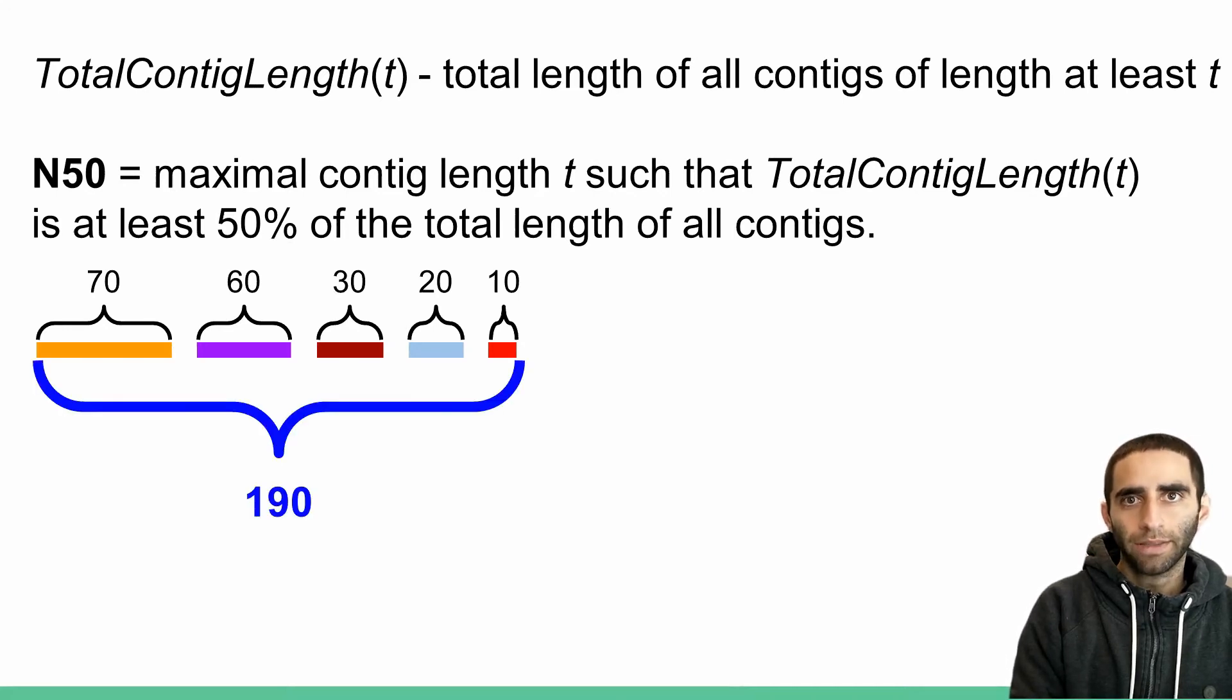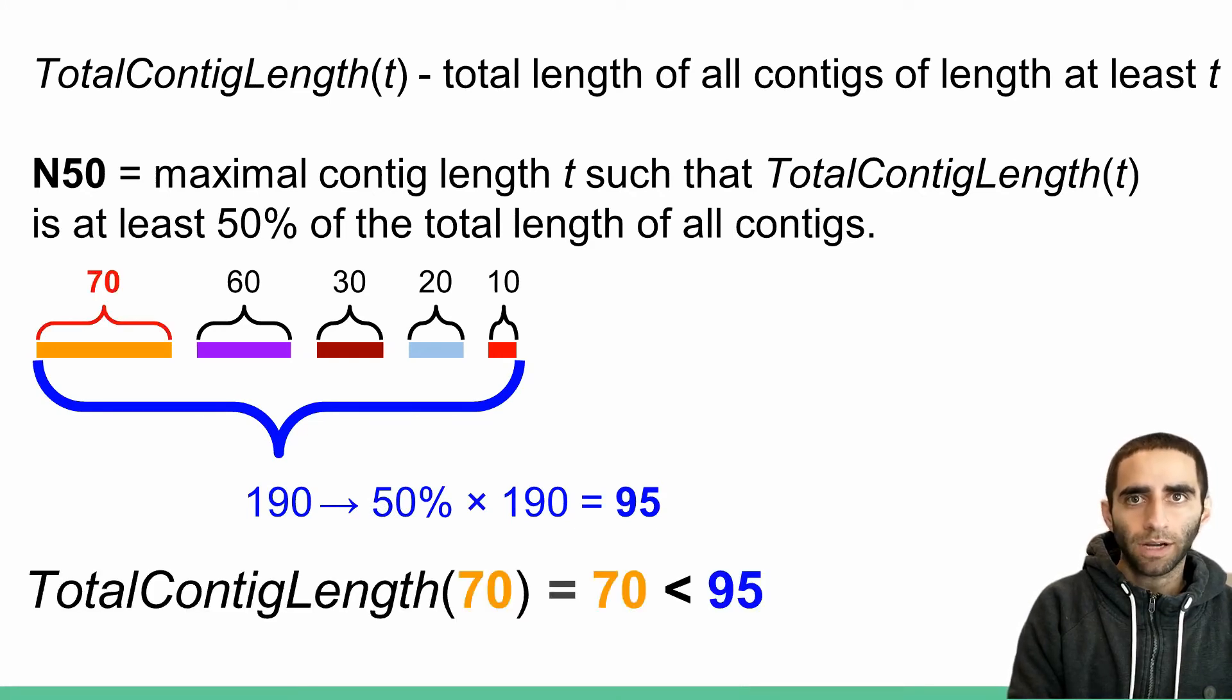The total length, or the sum of the lengths of the contigs, would therefore be 190. 50% of the total length would therefore be 95. Let's first consider the longest contig. Its length is 70. Therefore, total contig length of 70 is just 70. This is less than 95, which means we haven't finished yet.